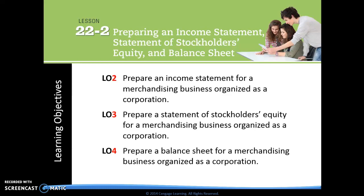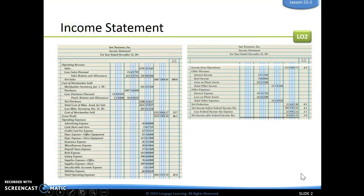Now, we've already prepared an income statement, a statement of stockholders' equity, and a balance sheet. It's just we haven't done that for a merchandising corporation yet, so that's what's going to be new. So this first page is just showing us what our income statement is — this should not be anything new. We've seen what this looks like before.